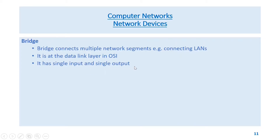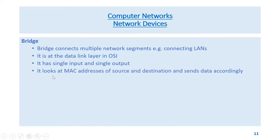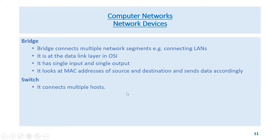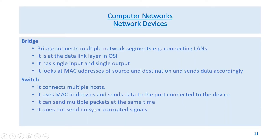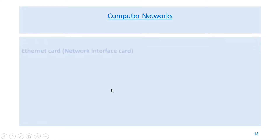A bridge has a single input and single output. It looks at MAC addresses of source and destination and sends data accordingly. A switch connects multiple hosts. It uses MAC addresses and sends data to the port connected to the device. It can send multiple packets at the same time and does not send noisy or corrupted signals.